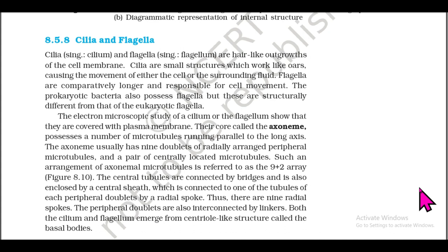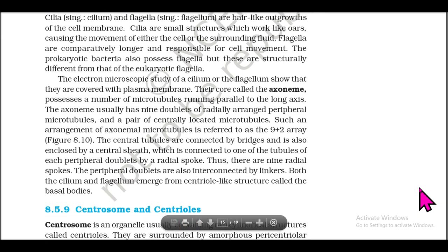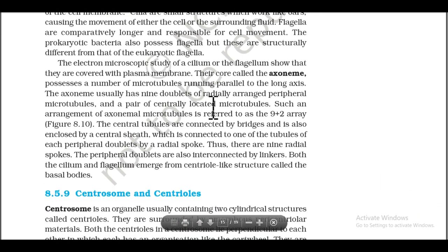Section 8.5.8: Cilia and Flagella. Cilia (singular: cilium) and flagella (singular: flagellum) are hair-like outgrowths of the cell membrane. Cilia are small structures which work like oars, causing the movement of either the cell or the surrounding fluid. Flagella are comparatively longer and responsible for cell movement. The prokaryotic bacteria also possess flagella but these are structurally different from eukaryotic flagella. Electron microscopic study of cilia or flagella shows they are covered with plasma membrane, and their core called the axoneme possesses a number of microtubules running parallel to the long axis.